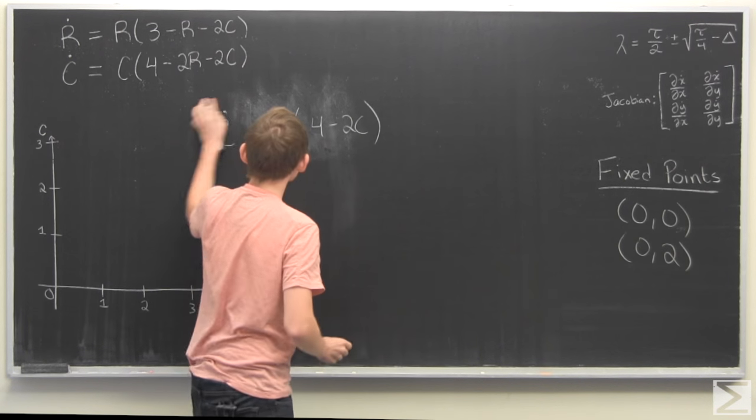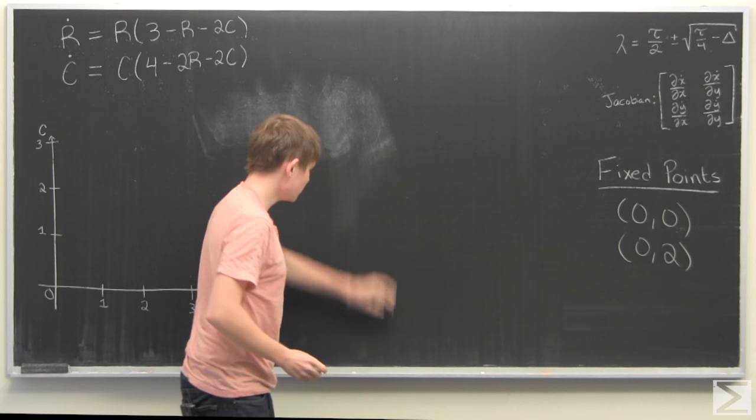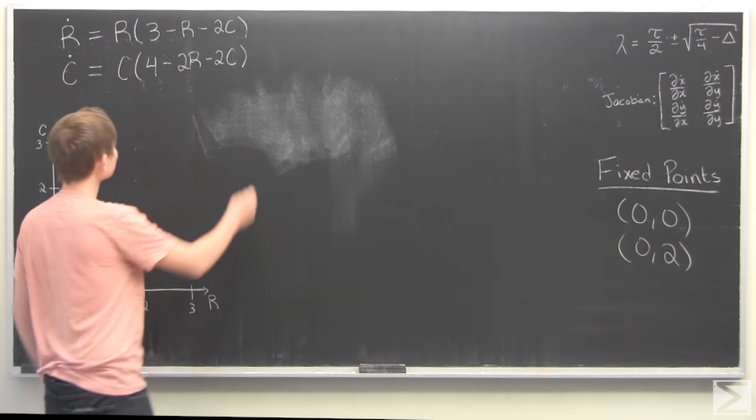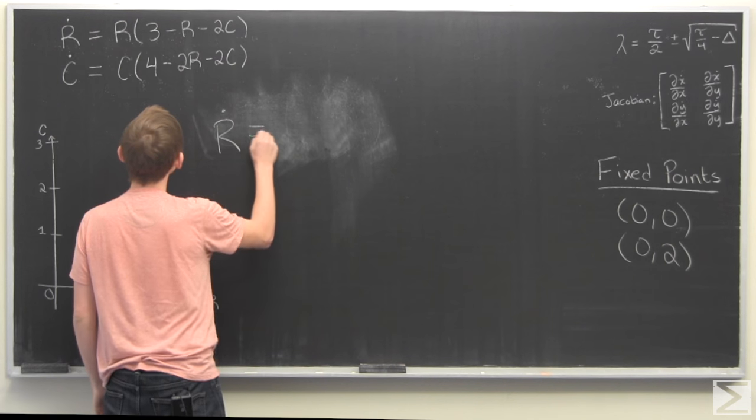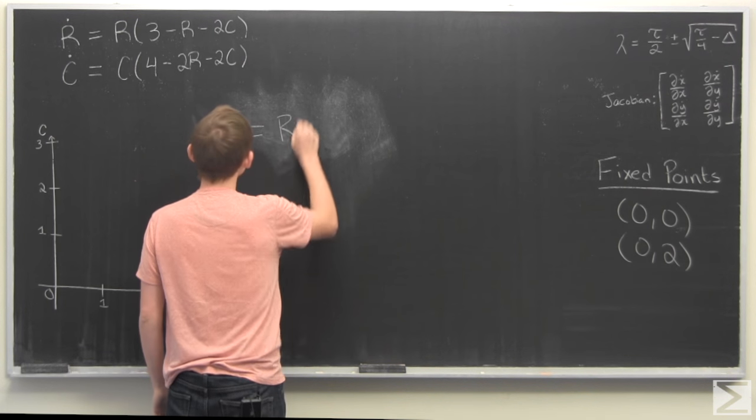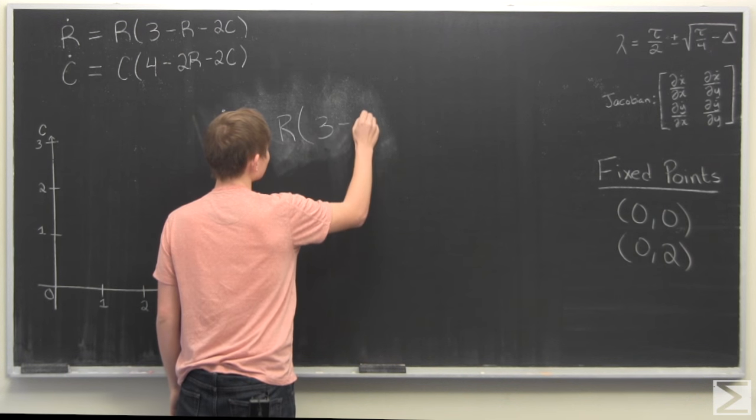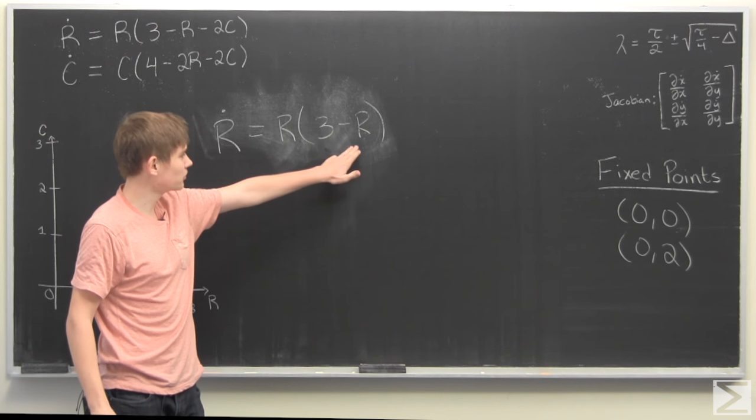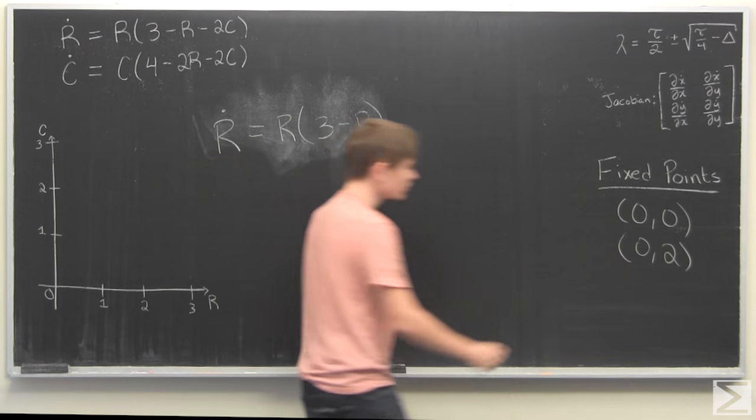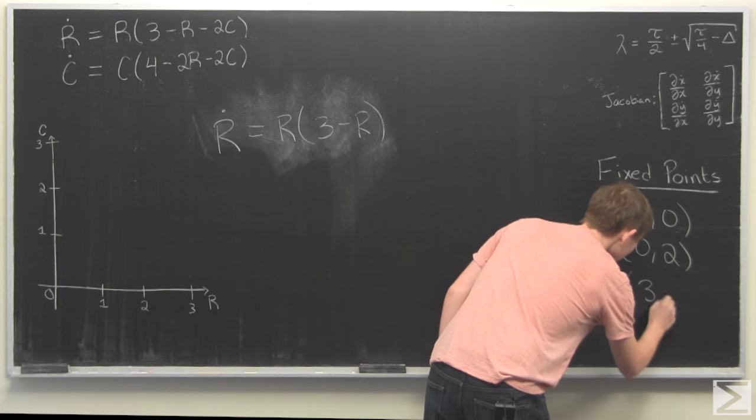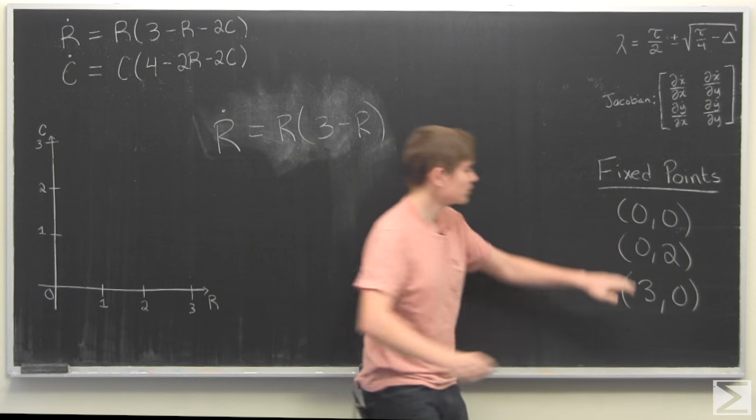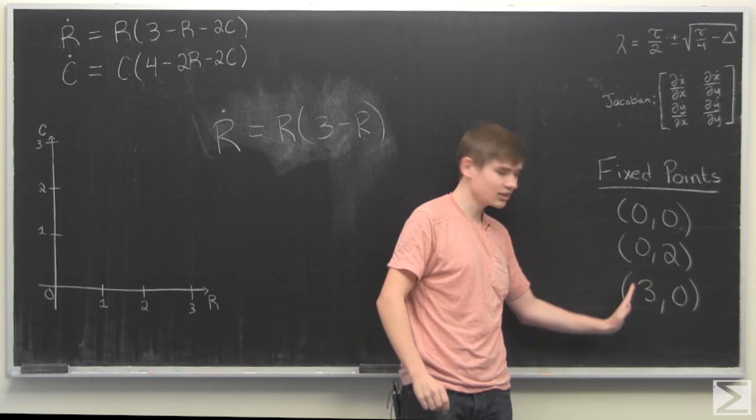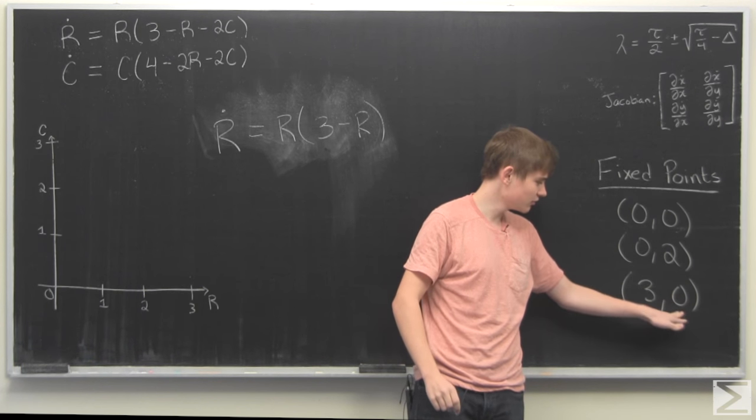So we can do the same thing and set C equal to 0 and see if we can find another value of R. We have R dot equal to R times 3 minus R. Therefore if we have R equal to 3 this is equal to 0. So we have 3, 0. By the way we're going to have the X axis be R and the Y value be C.